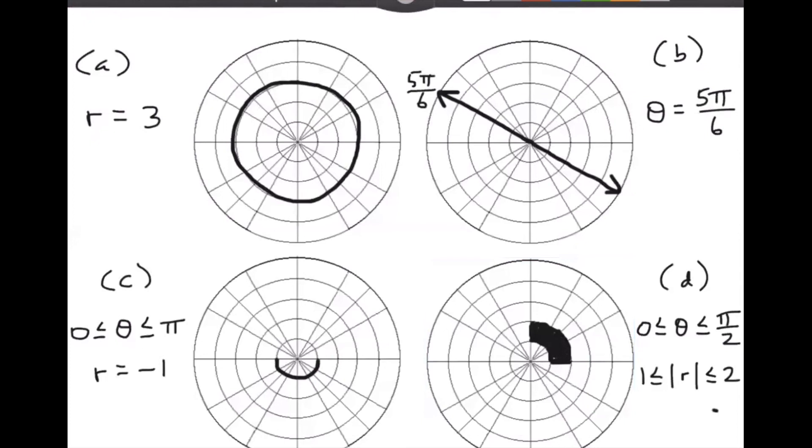But notice it says the absolute value of R is between one and two. That means that there are two possibilities. Either R is between one and two. The other possibility is that R is between negative two and negative one. So we need to reflect that region through the origin. And the complete graph of this region would include all of this stuff over here.